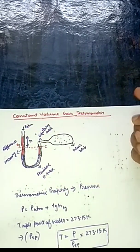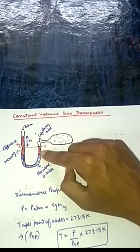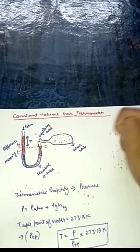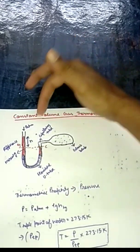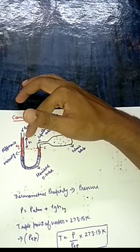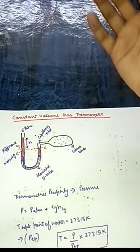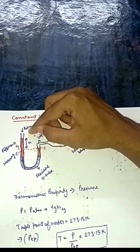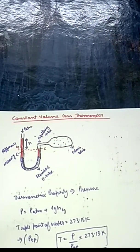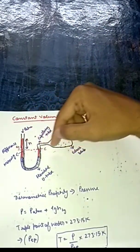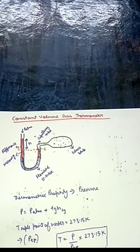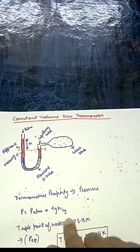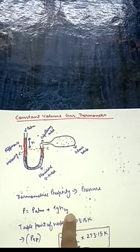Since we have to keep the mercury level at mark C, the tube has to be opened to the atmosphere. Atmospheric pressure acts from above to maintain the mercury level at mark C. That is how we arrive at the formula P = P_atmosphere + ρgh.